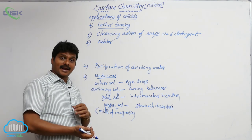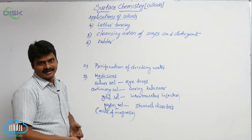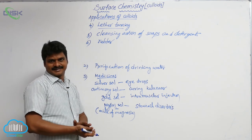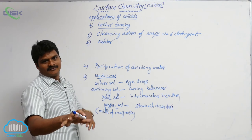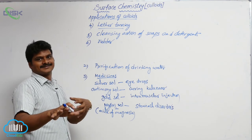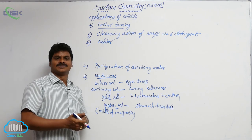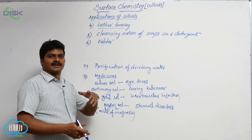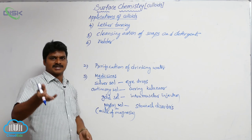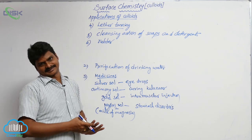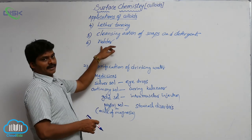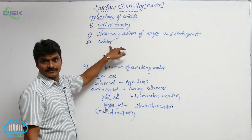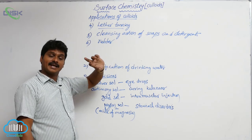When latex is coagulated by the addition of salts, rubber is formed. The difference between latex and rubber is that latex is a colloidal solution, while rubber is a coagulated colloidal solution. Natural rubber has many uses, which will be discussed in a separate chapter on polymers. Rubber is obtained by the coagulation of latex, which is a negative, solid-in-liquid type colloidal solution.